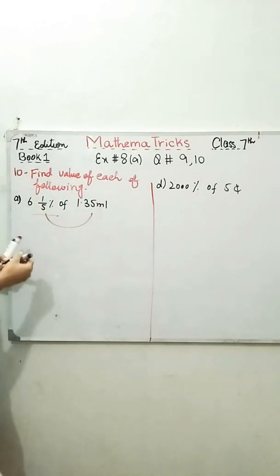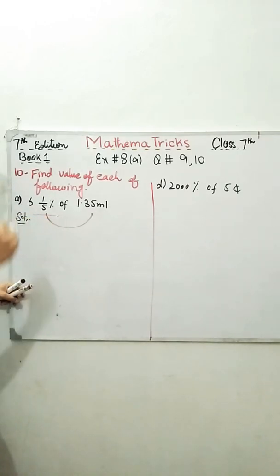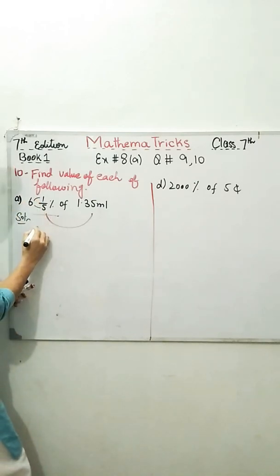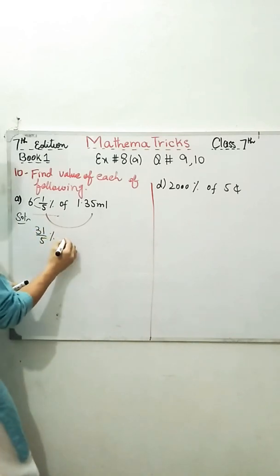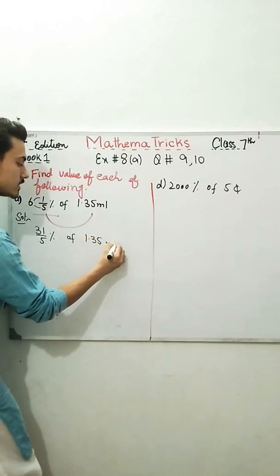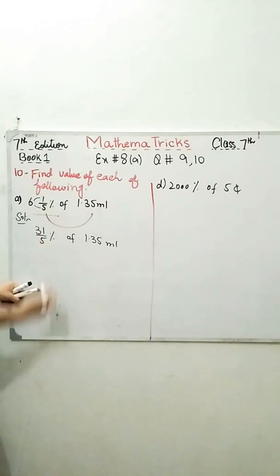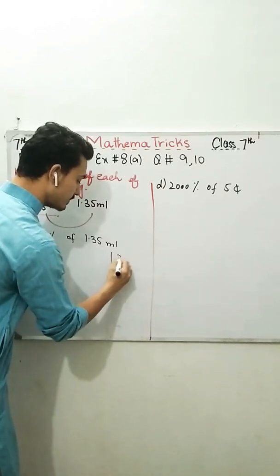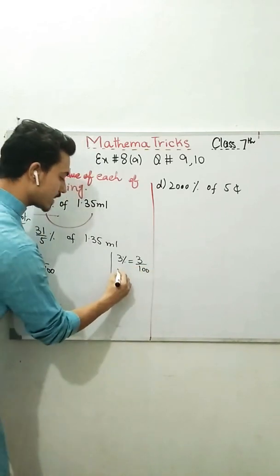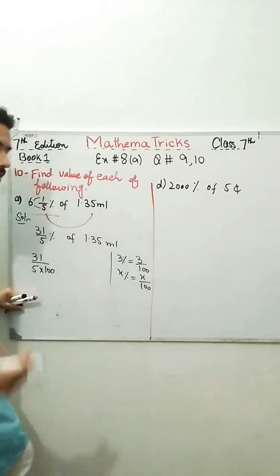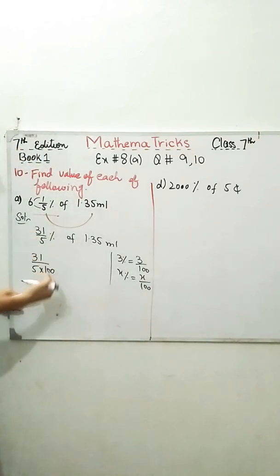Let's solve it. First of all, we need to convert this fraction into simple form. We know that simply just multiply. If I see the 30 plus 1, I got 31 over 5 percent of 1.35 ml. Let's convert this fraction or this percentage open it 31 over 5.